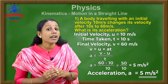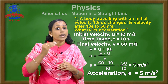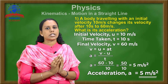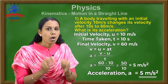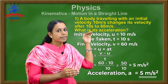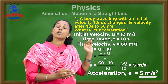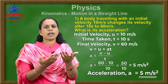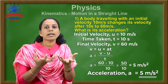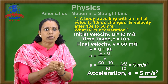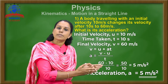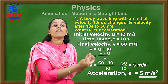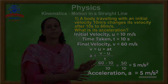The acceleration of the body is obtained as 5 meter per second square. This was a simple numerical from that section using the first equation of motion. We identify the known quantities, connect them to the appropriate equation of motion, substitute the values, and get the answer. Acceleration is equal to 5 meter per second square.